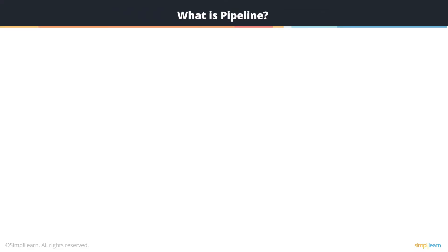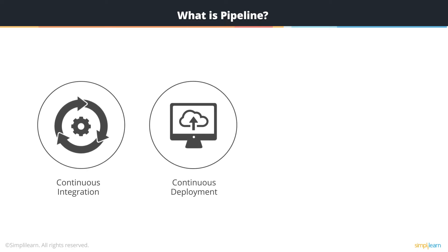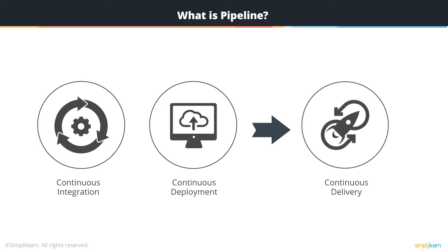So what exactly is a pipeline? A DevOps pipeline is essentially your setup in a software project that helps to deliver continuous integration, continuous deployment, and eventually continuous delivery of your software project. We will discuss continuous integration, continuous deployment, and what exactly we mean by continuous delivery in more detail here.